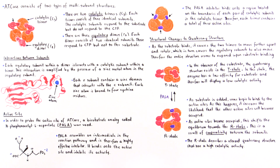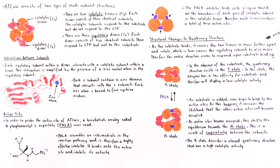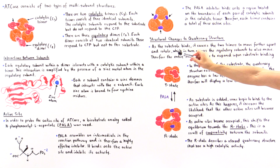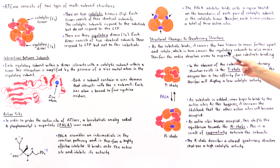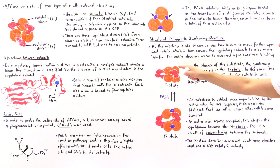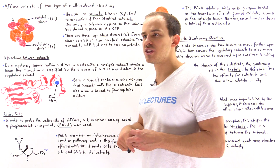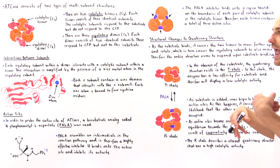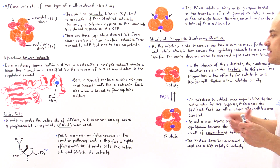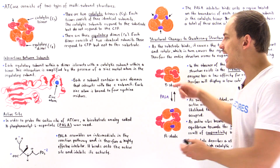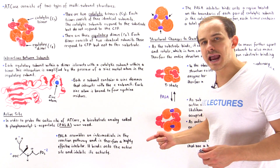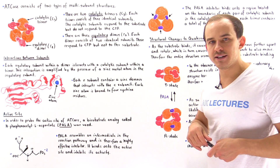As the substrate binds, it causes the two trimers to move farther apart and rotate, which in turn causes the regulatory subunits to also move. Therefore, the entire structure expands upon binding of the substrate molecule to the active site. As more active sites become filled, the T state transitions into the R state and the equilibrium shifts.